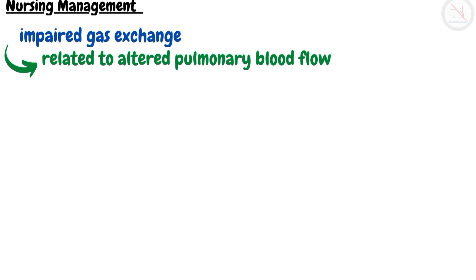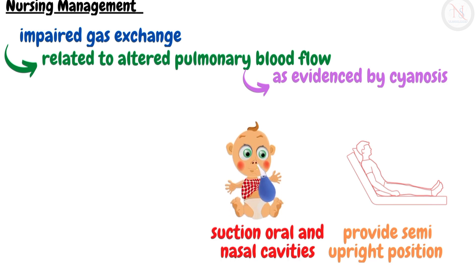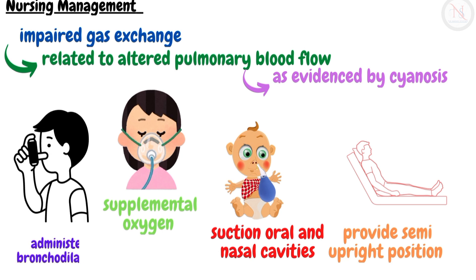For nursing management, the first nursing diagnosis is impaired gas exchange related to altered pulmonary blood flow, as evidenced by cyanosis. Nursing interventions include positioning the child in a semi-upright position to facilitate breathing, suctioning oral and nasal cavities if required, monitoring oxygen saturation, administering supplemental oxygen if needed, and administering bronchodilators if prescribed.